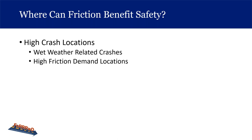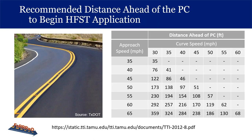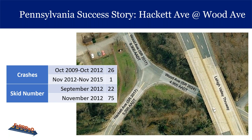We're focusing on horizontal curves in our class, and that's definitely one of the main areas for high friction surface treatment. It also benefits approaches to intersections and downhill grades. A chart developed through Texas A&M University research shows how far ahead of the point of curvature you would begin the application. If you have a 55 mph roadway with a curve that has a 35 mph advisory speed, you'd want to begin the treatment close to 200 feet before the point of curvature and continue all the way through the curve.